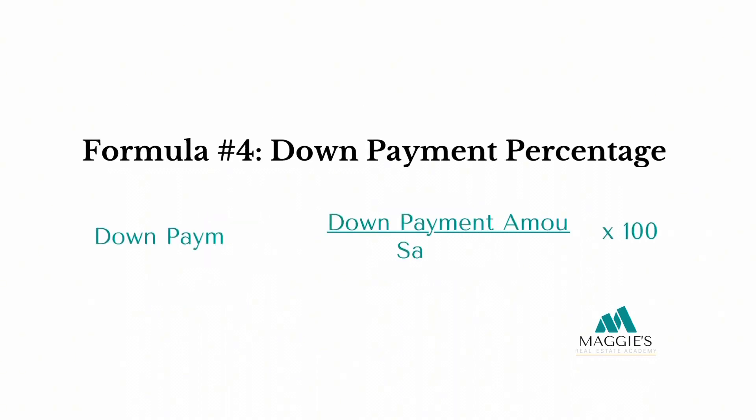Formula number four: down payment percentage. Down payment amount divided by sales price times 100 equals down payment percentage.